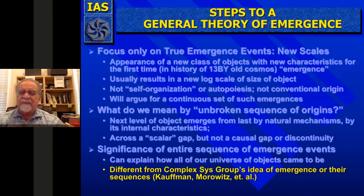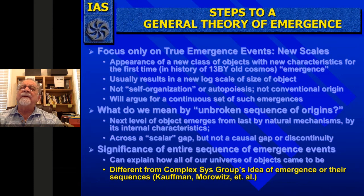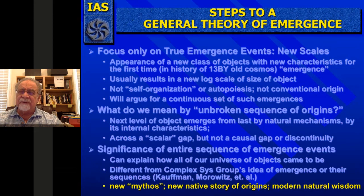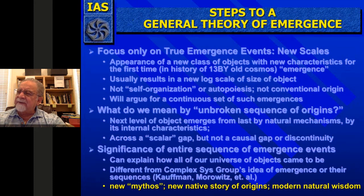The significance of the entire sequence of emergence events is that it can explain how all of our universe of objects came to be without a break. This is different from complex systems groups' ideas — Kaufman's work, Morowitz's work, Tyler Volk's work — which are all related to specific entities. It's different from David Christian's because it uses empirical and scientific approaches. It's a creature of system science, not of history. It could lead to a new mythos, a new native story of origins, and speaks to modern natural wisdom.